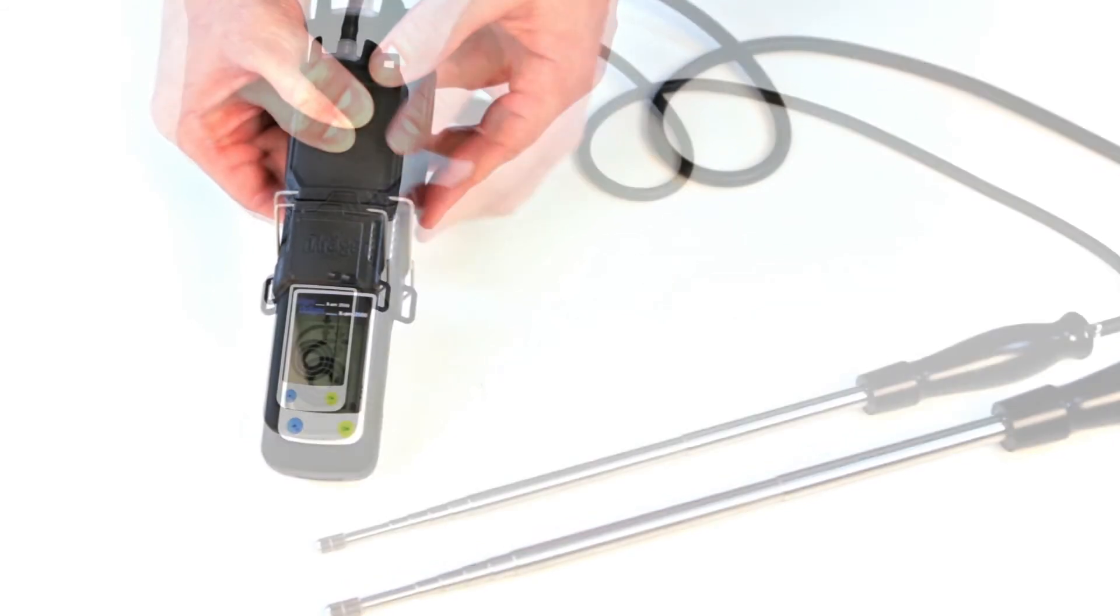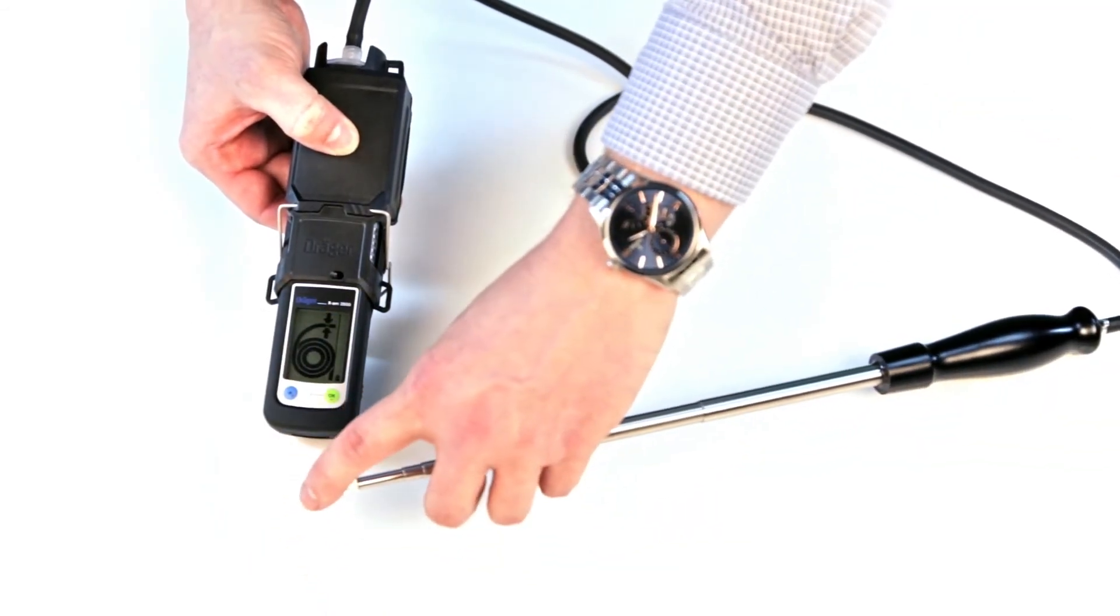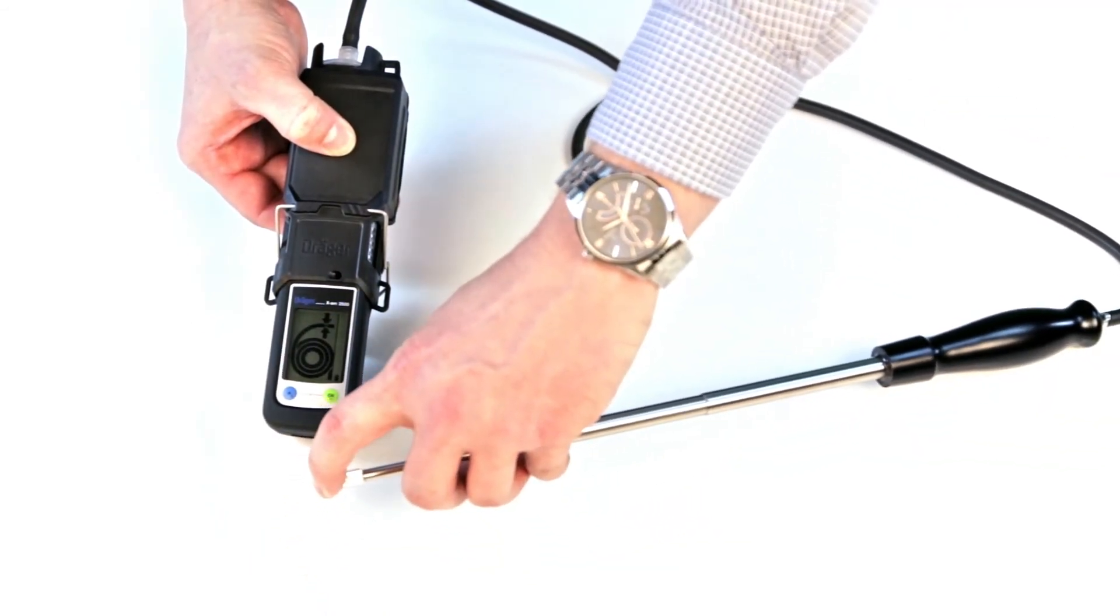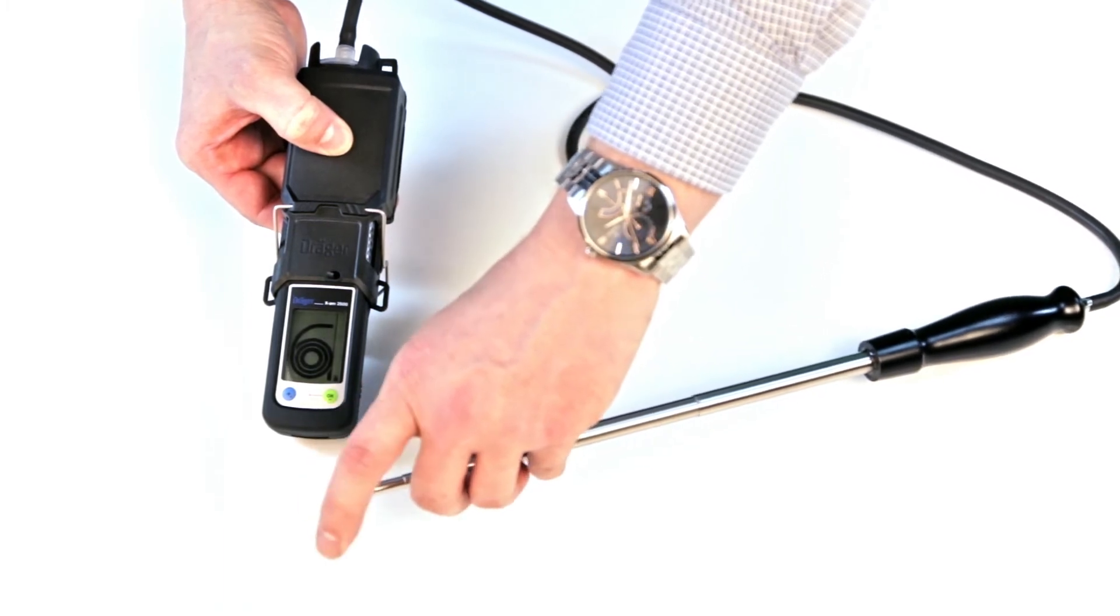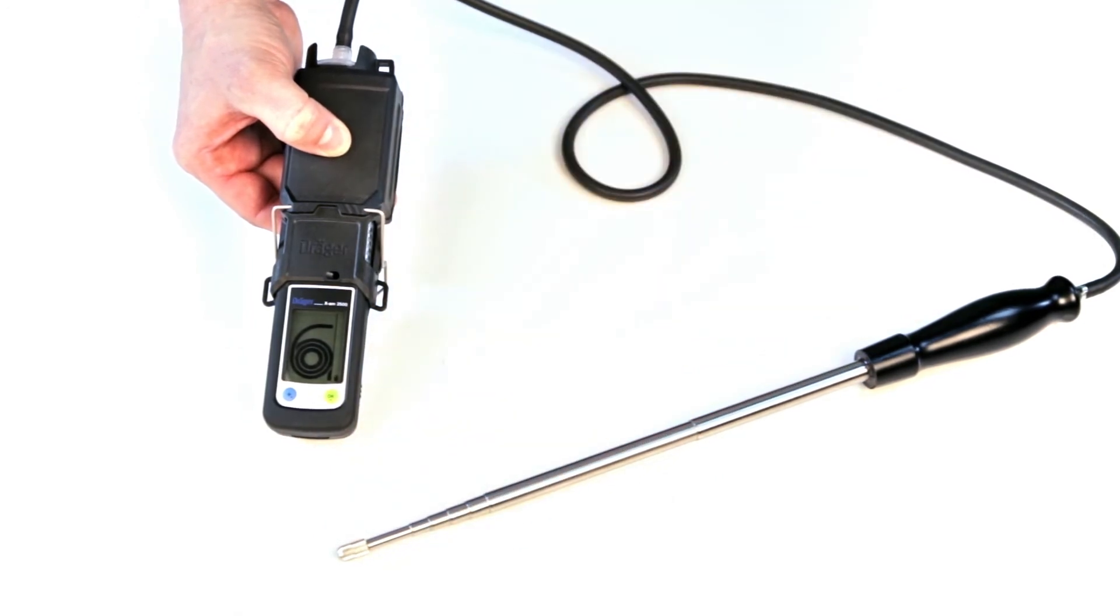To check the flow of the pump, block the end of the hose or probe with your finger. When the system is tight, the pump will stop. If the flow check is completed successfully, the open symbol is shown and the pump will start again.